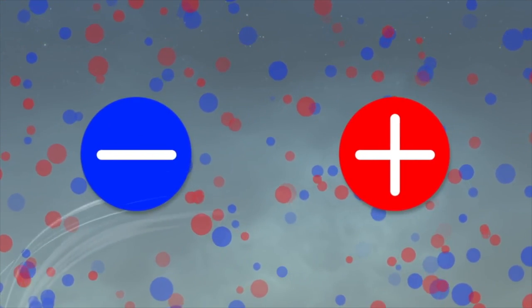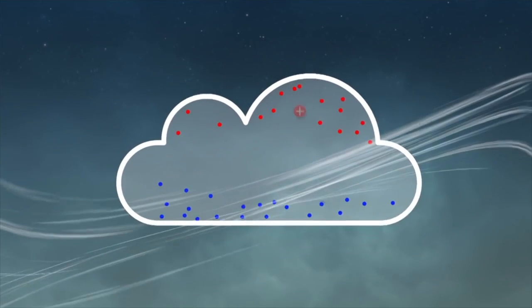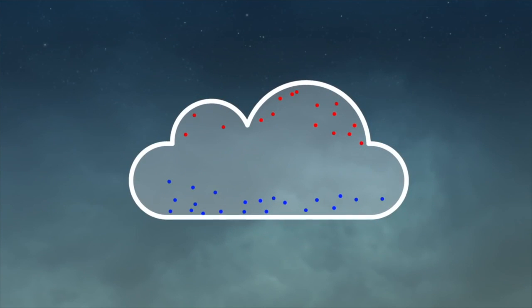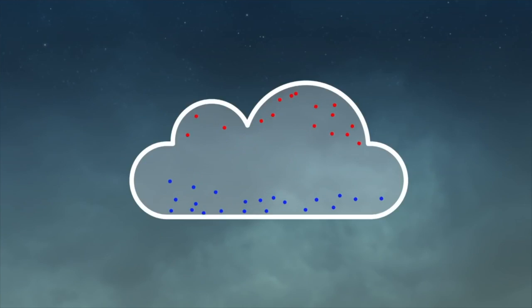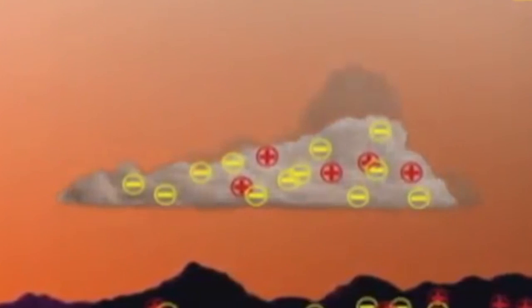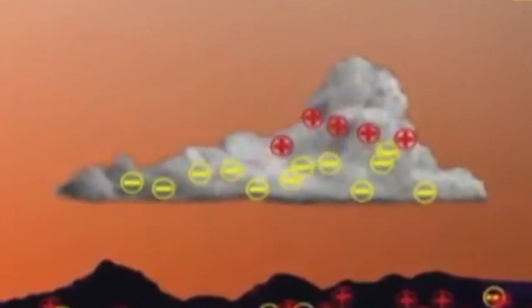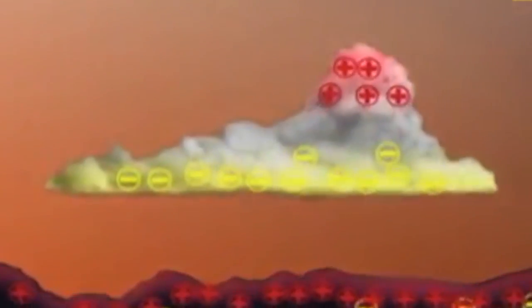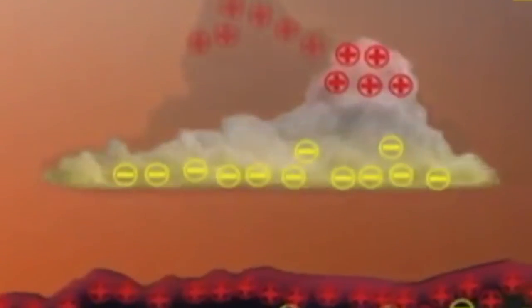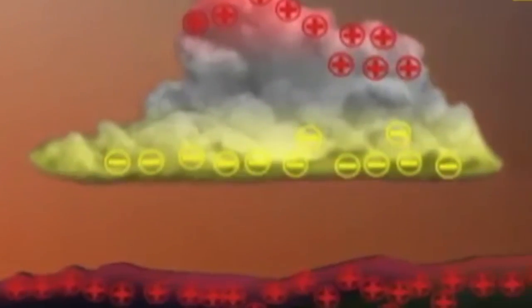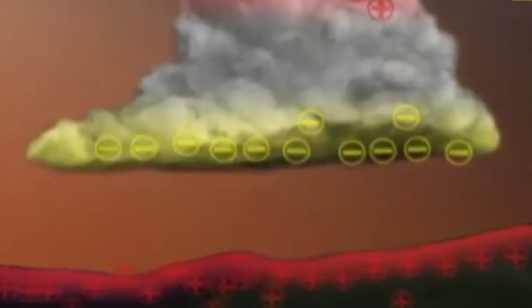Once a significant charge separation has built up, the positive and negative charges want to combine with each other and neutralize. Streamers come up from the ground to form a pathway for them. Once a pathway is completed, a spark forms, neutralizing the charge. As the negative charge races down, the air surrounding it heats up.